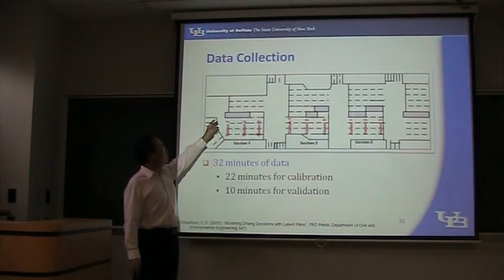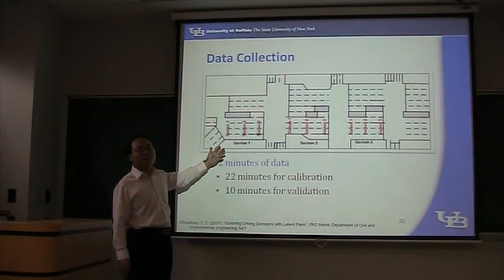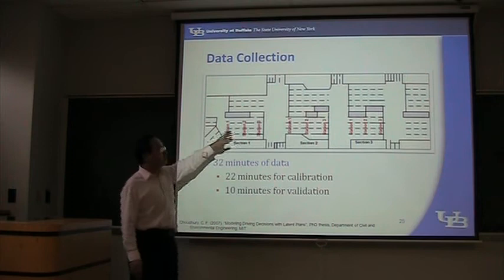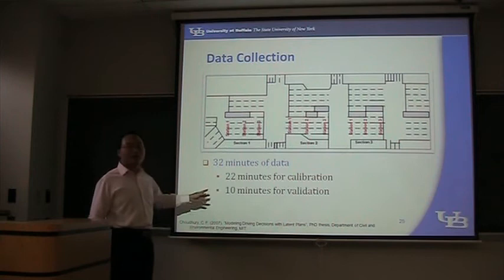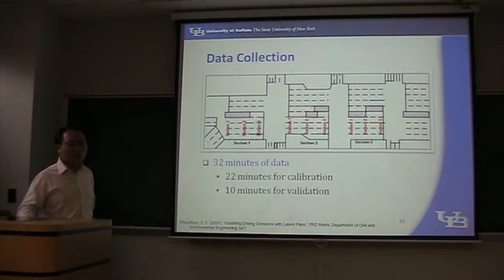These three stations can collect traffic speed data at any time, and also the traffic flow for each lane at any time. Remember: three sections and three stations for each section. They collected data for 32 minutes, and they split the data using 22 minutes for calibration and the remaining ten minutes for validation.